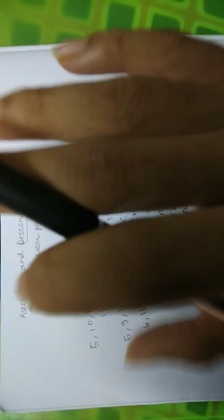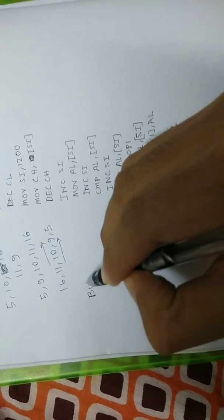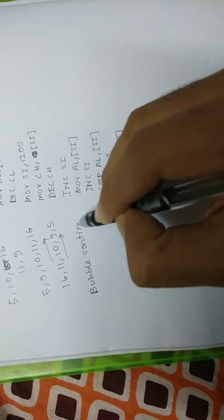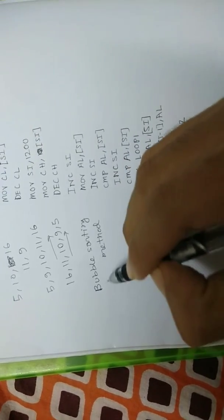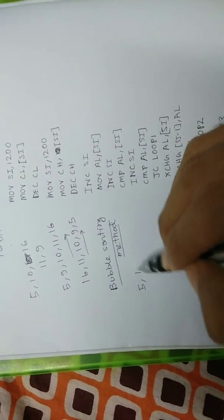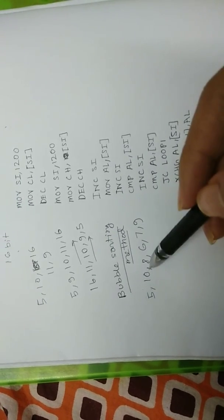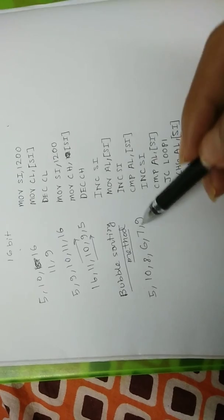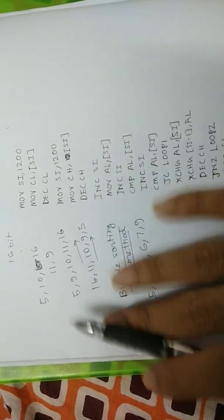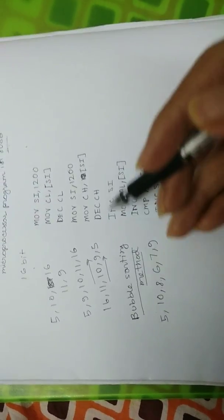The ascending and descending order programming follows the bubble sorting method. In bubble sorting, suppose we are given random numbers like 5, 10, 8, 6, 7, 9 — all arranged randomly without following any sequence. We need to arrange them in order using this method.